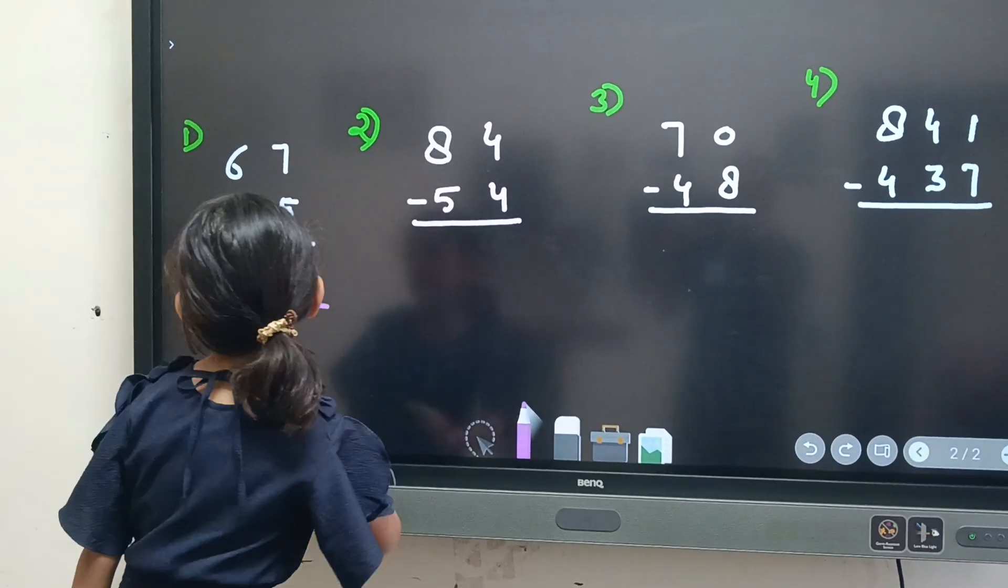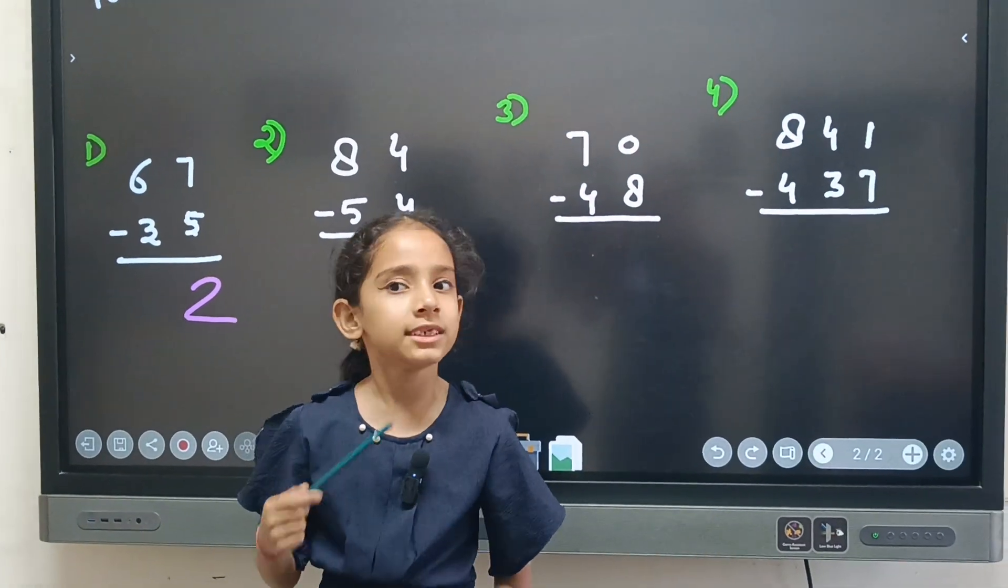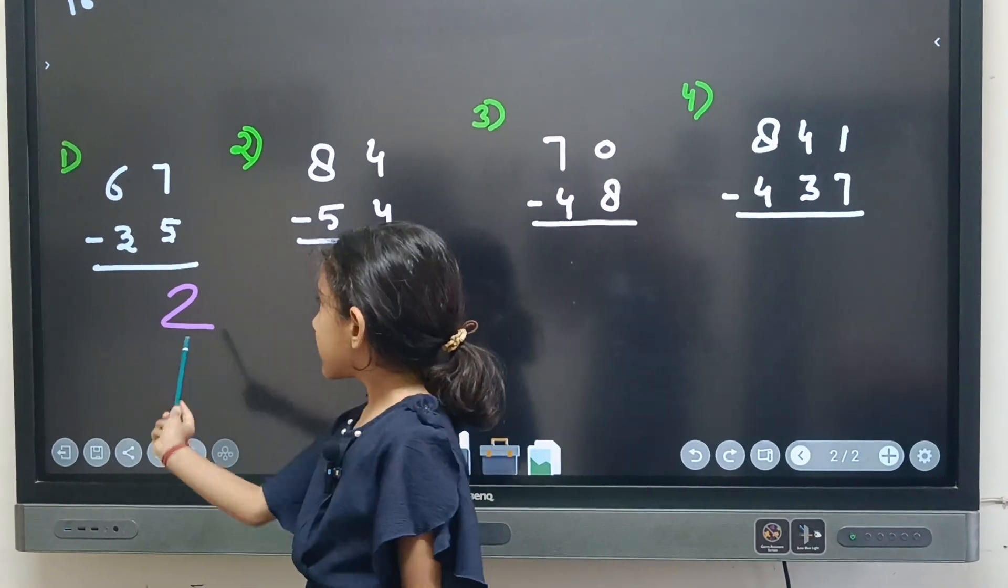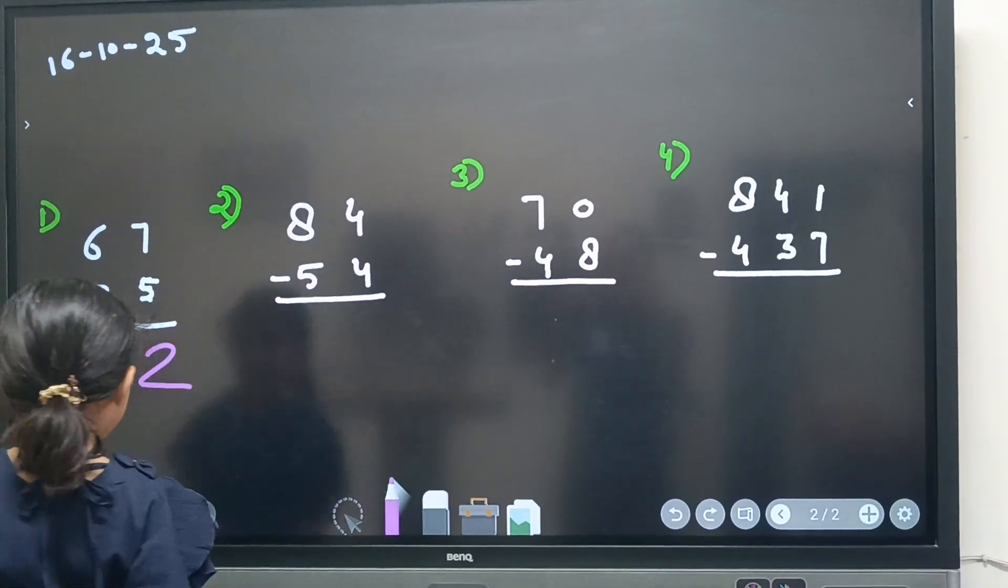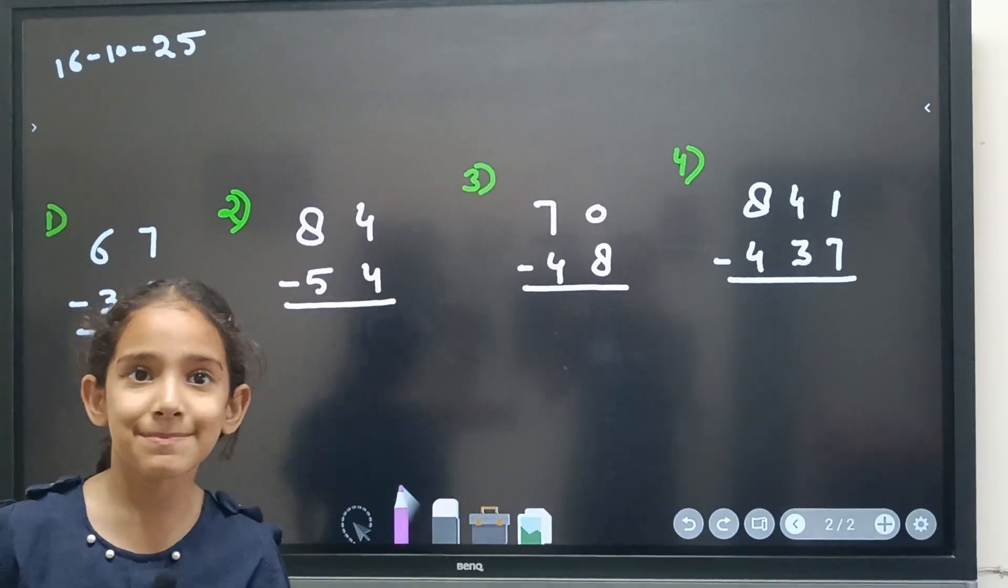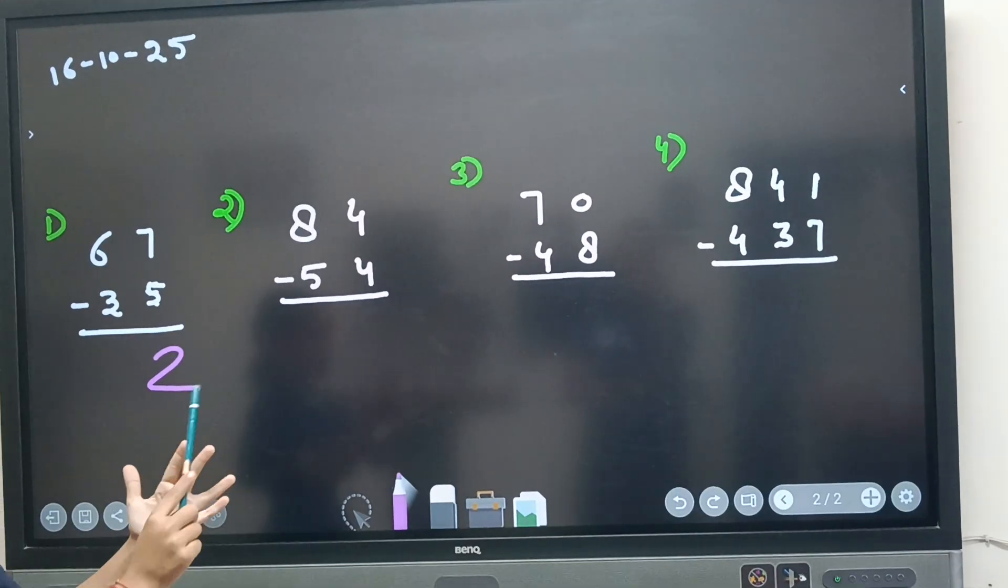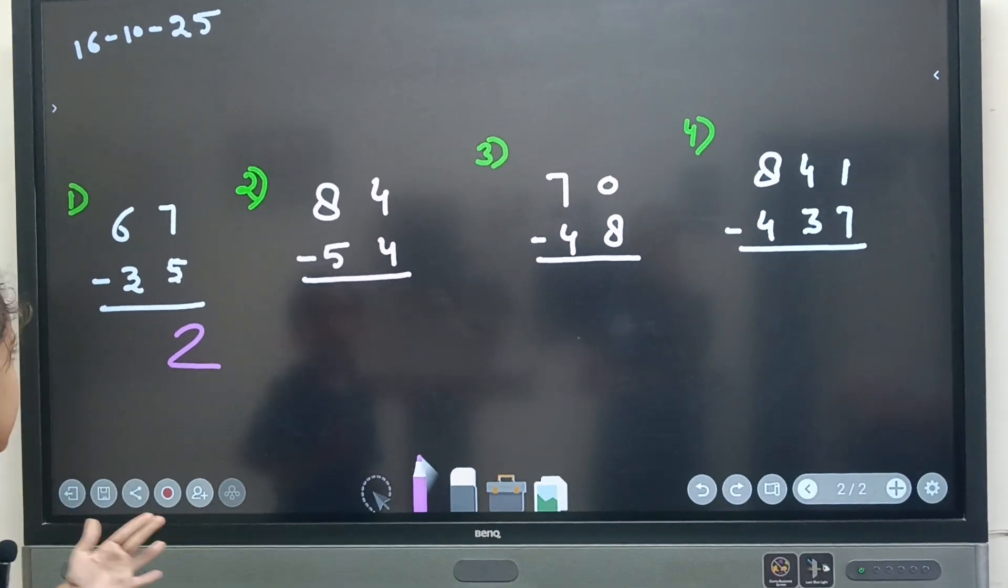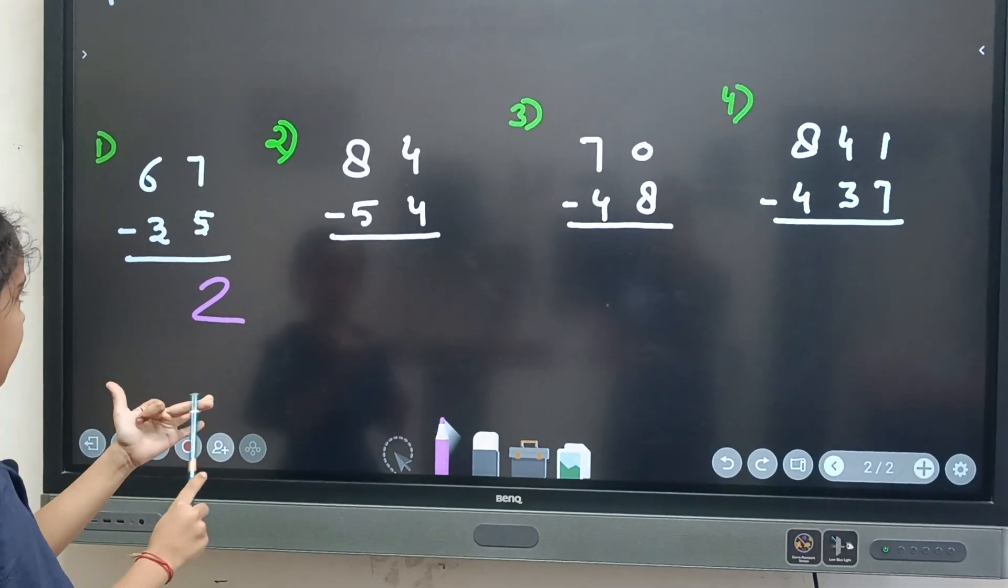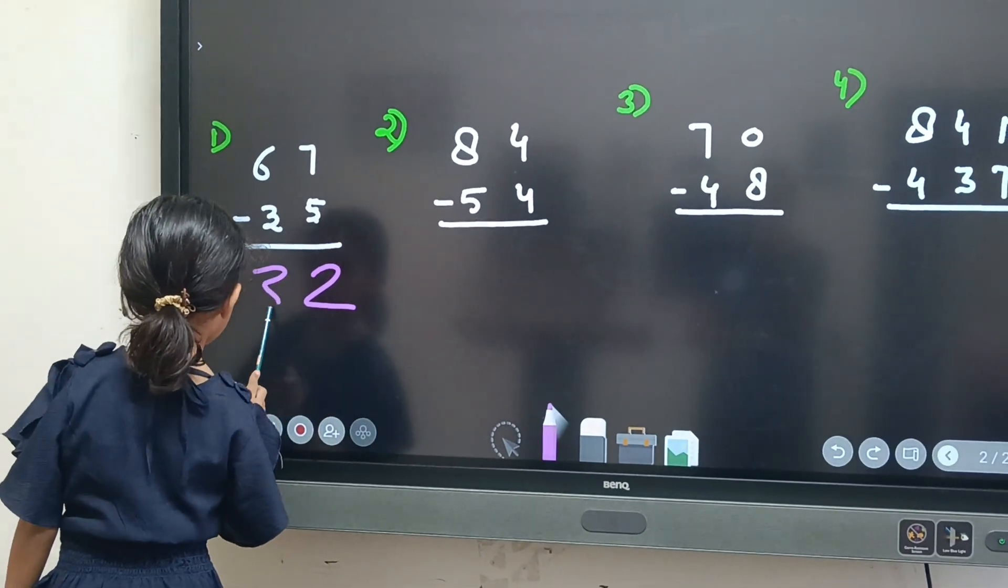Now second question is 6 minus 3. It is borrowing or no borrowing? It is no borrowing. Because 6 is taller number and 3 is shorter number. Now 6 minus 3. We want to raise 6 fingers. But one hand we have only 5 fingers. So we will raise here. 3 and 3 makes 6. And we close 3 fingers. And how many fingers we have left? 3. So answer is 3.